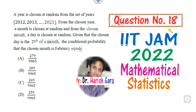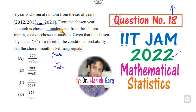Hello students, welcome to the next lecture on the IIT JAM 2022 Mathematical Statistics. Today we will discuss question number 18. You can read the statement given to you. You have to pick one year from a set, from that year pick a month, from that month pick a day. You have to find the conditional probability, and whenever there is a conditional probability, you always apply Bayes' theorem. This is a simple question — let's see how you can solve it in a fraction of a second.